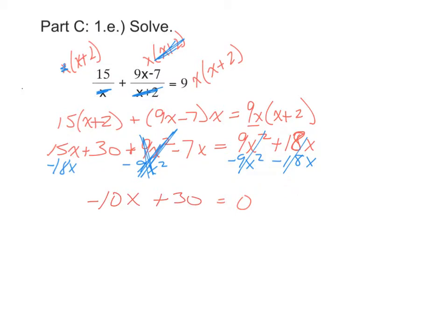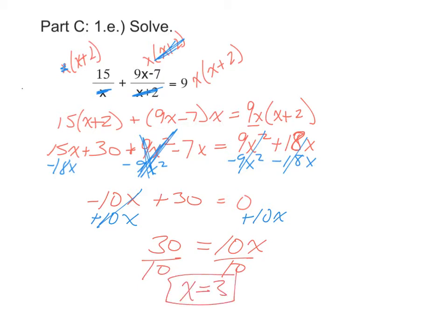So what I thought was quadratic really isn't. That's good news. So I'm just going to get all the x's on one side. I'll just add that 10x over here. Leaves me with 30 is equal to 10x. Divide both sides by 10, and there's our solution, x equals 3.